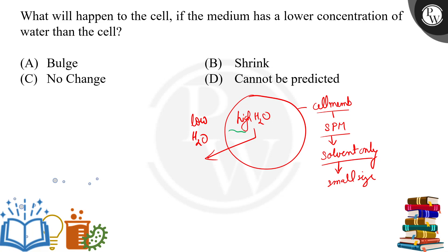Agar yeh animal hai toh cell wall nahi hoga, phir bhi cytoplasm se paani khatam ho raha hai, yani woh shrink karega. Toh correct answer would be shrink. Bulge tab karta jab thik ulta hota. No change toh ho hi nahi sakta.